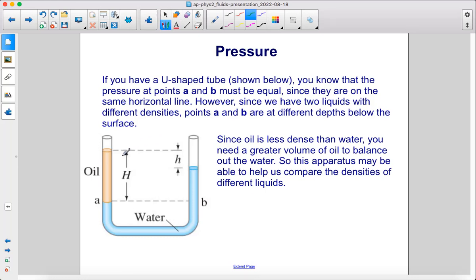If you have a U-shaped tube like this one, you know that the pressure at points A and B must be equal since they're on the same horizontal line. So this is a little bit different than what we saw before. But if you draw that horizontal line, you'll know that the pressure right here is the same as the pressure right there.